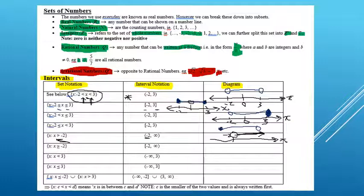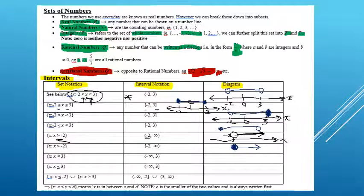The next set is the same but x is greater than or equal to negative 2, so now we include negative 2. On the number line, we'd color the circle in. The next interval says x is less than 3, so we'd have an open circle at 3 on our number line, and it's all the values to the left of it.